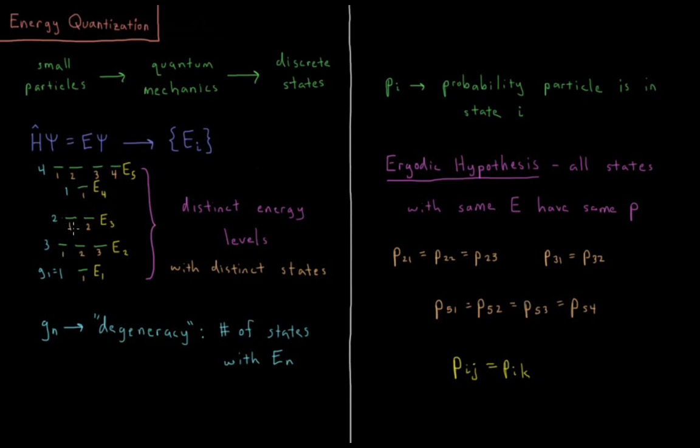For energy level 3, P3,1 and P3,2, they're both equally likely to be observed that the system is in those states. For energy level 5 here, we have four states: P5,1, 5,2, 5,3, 5,4, all of those are equal. Any state with an equal energy has an equally likely chance of being observed under the ergodic hypothesis.